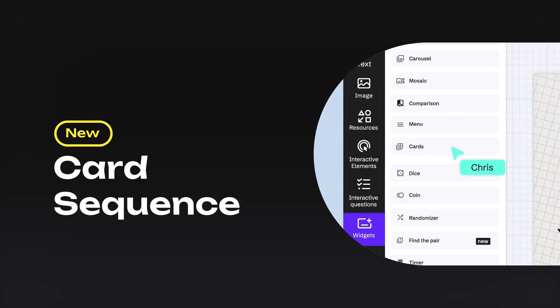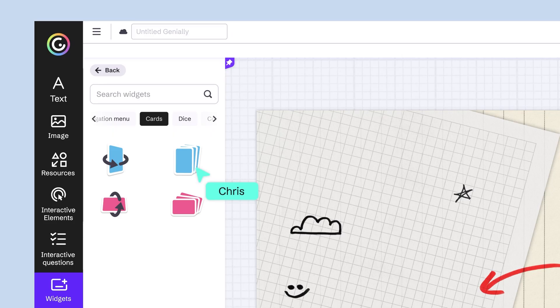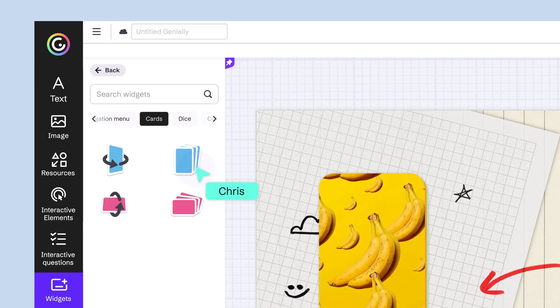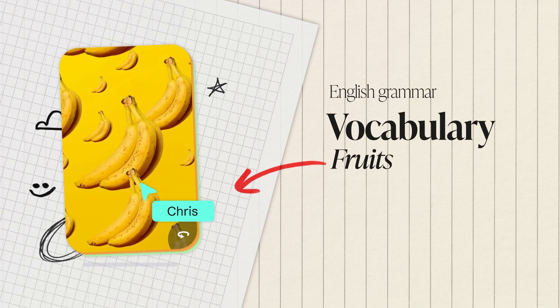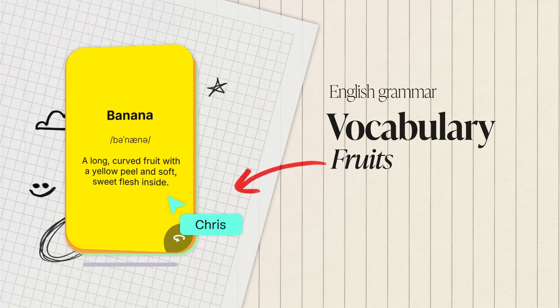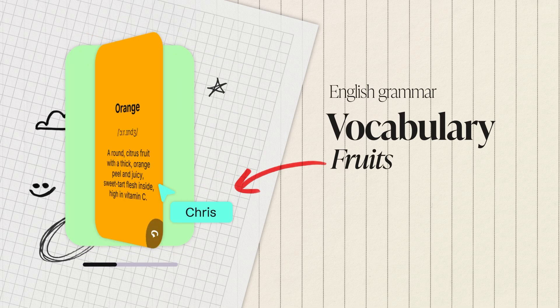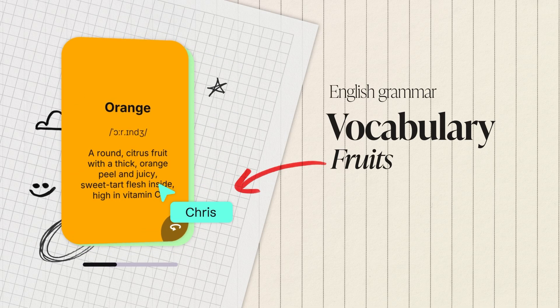Want to spotlight a specific topic? Use a card sequence! As users progress, the next card appears. Perfect for review flashcards!